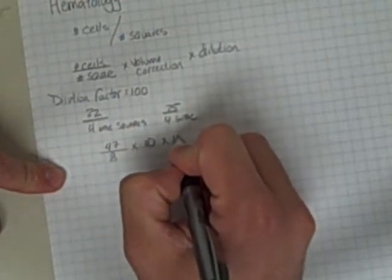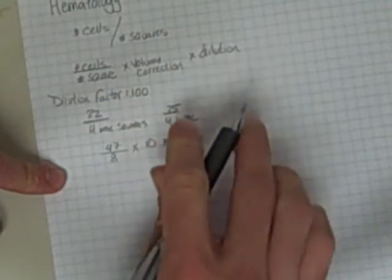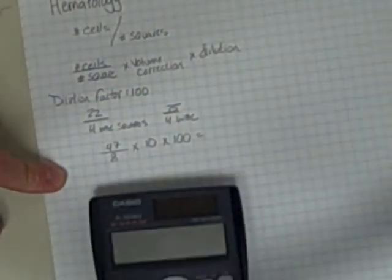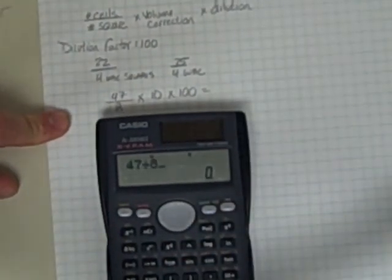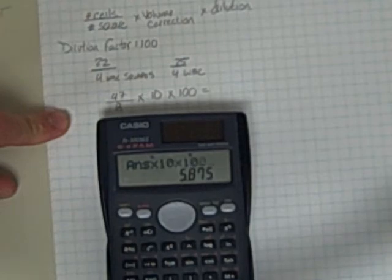We would multiply that by our dilution factor of 100, and we would have 47 divided by 8 times 10 times 100.